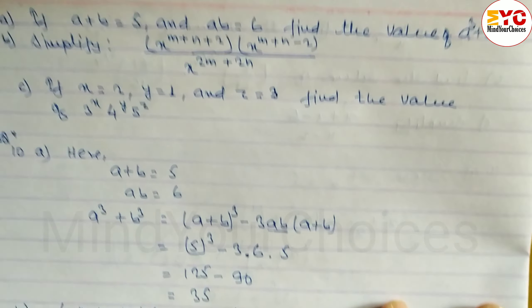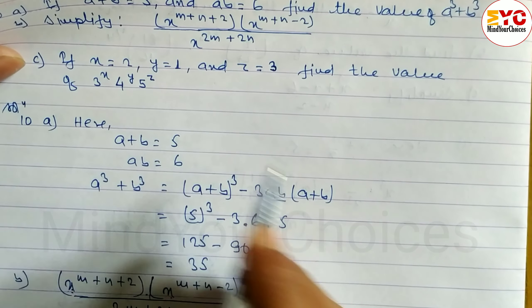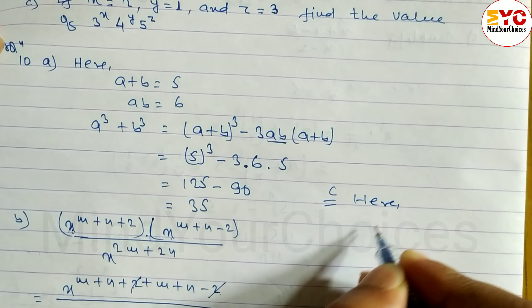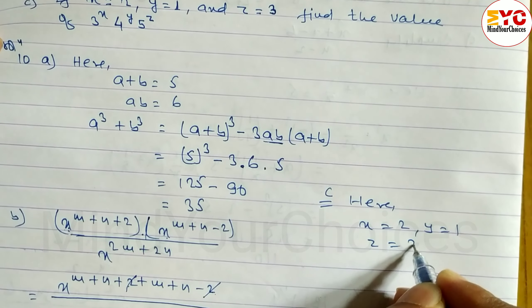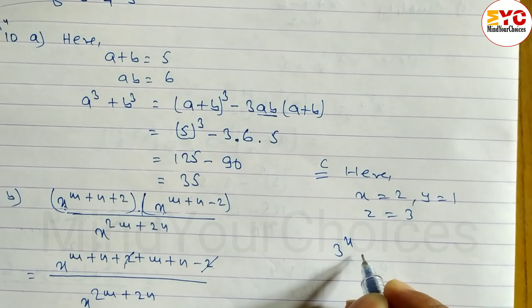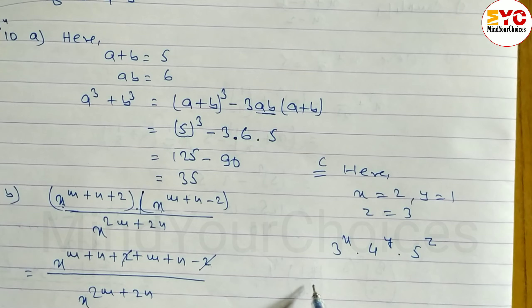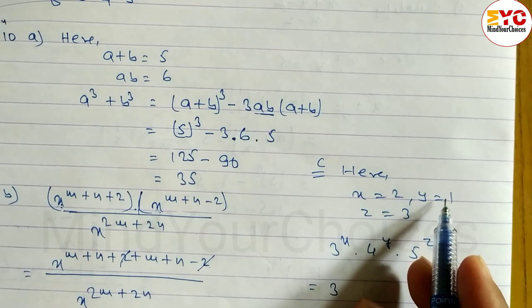Now look at question 10c. Here x is equal to 2, y is equal to 1, and z is equal to 3. Find 3 power x, 4 power y, and 5 power z. Just put the values.